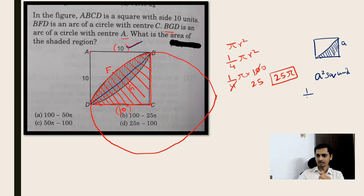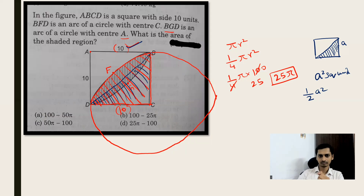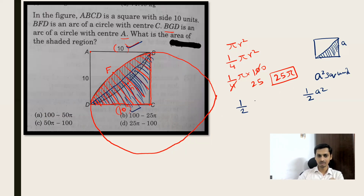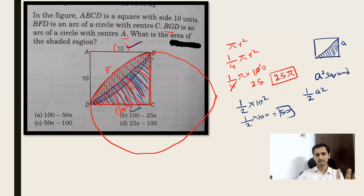I want to find only half of the square's area — the region below the diagonal BD, shaded in blue. Half of the area is (1/2) × a². The side a is 10, so the full square area is 10² = 100. Half of that is 50. So the blue shaded region below diagonal BD has area 50.